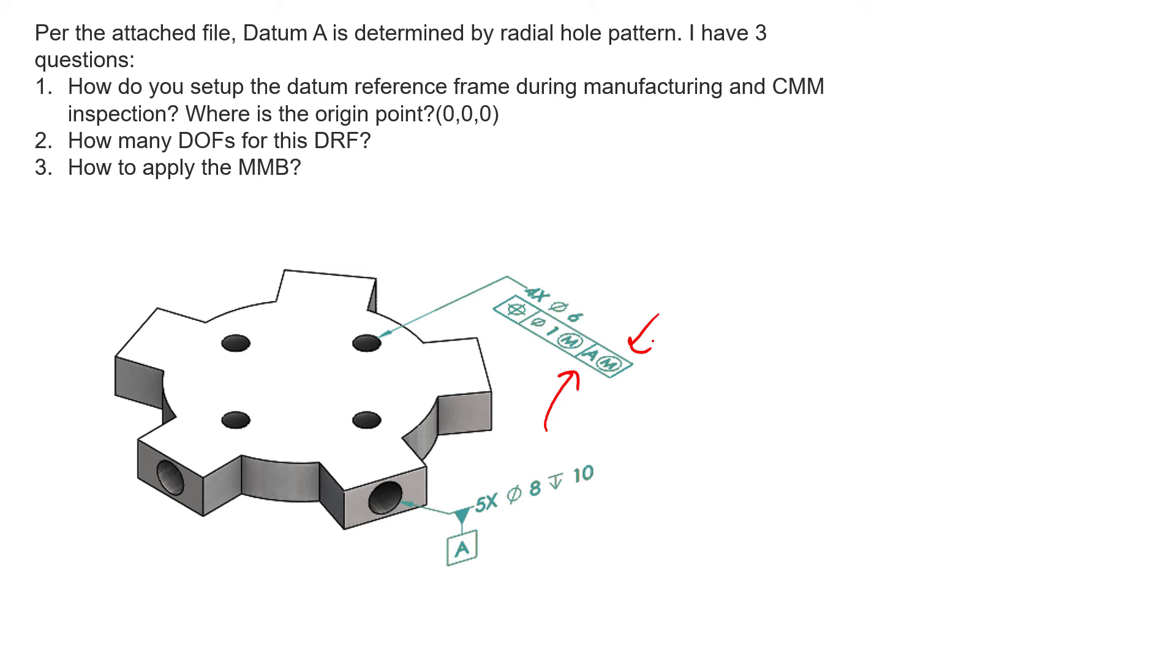There are a couple things missing from this drawing. We're missing basic dimensions for the radial hole pattern itself. There are five of them, they look equally spaced, so we can safely assume that 360 degrees divided by five is going to be our basic dimension between those holes. We're missing basic dimensions between all our other features as well as the dimensions and controls for the outside perimeter, but we can ignore those for now.